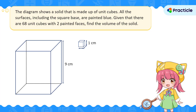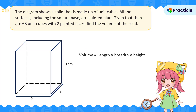Now let's recall how to find the volume of the cuboid. To do that, we can multiply its length by its breadth by its height. But the thing is, we're only given the height of the cuboid in this problem — we don't know the length and breadth. The good news is we have two clues: the height of the cuboid is 9 cm, and there are 68 cubes with two painted faces in this cuboid.